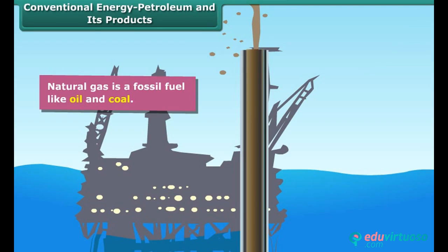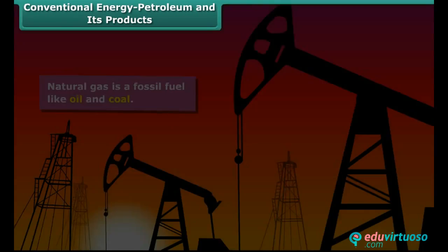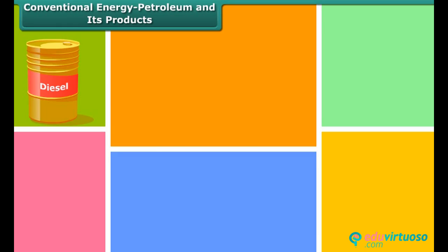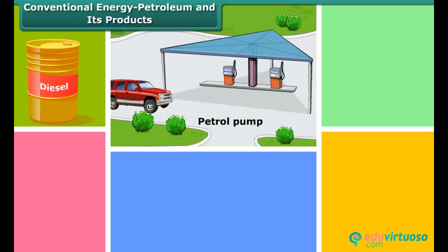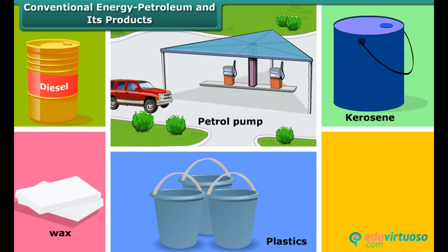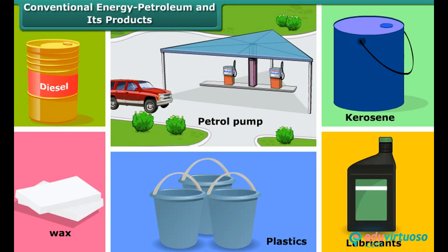The crude oil is sent to refineries for processing. Diesel, petrol, kerosene, wax, plastics and lubricants are obtained from petroleum refining.